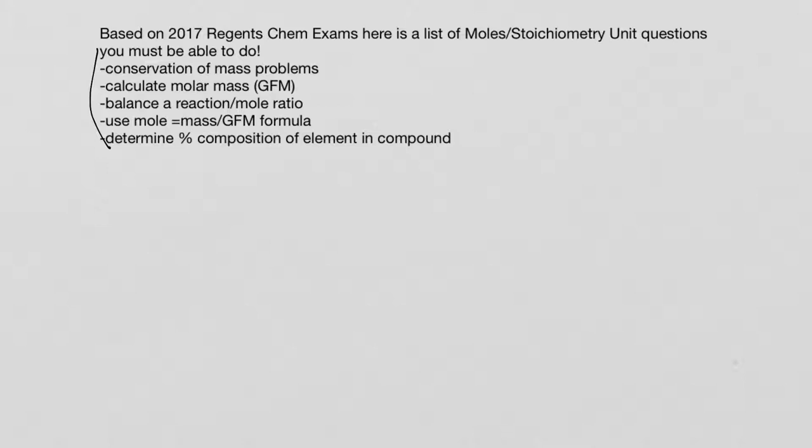One other question that came up that I saw when I was cutting and pasting and I missed it to put it on the list here, but that would be taking an empirical formula, which is the lowest whole number ratio of atoms that are in a compound, and getting the empirical formula and the gram formula mass, and then converting to the actual molecular formula.